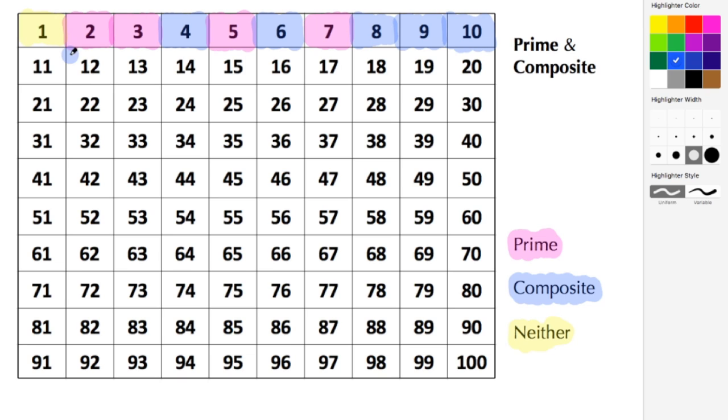We can tell if a number is even by looking at the ones place. If we see a 0, 2, 4, 6, or 8 in the ones place, then we know that that number is even.